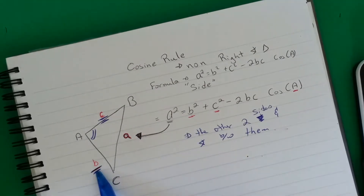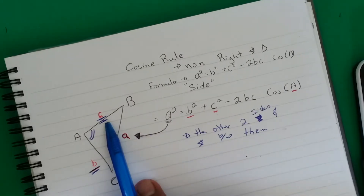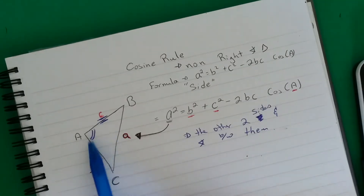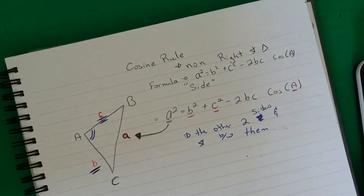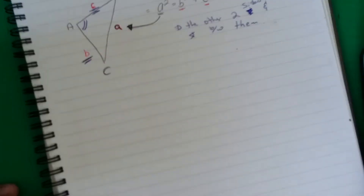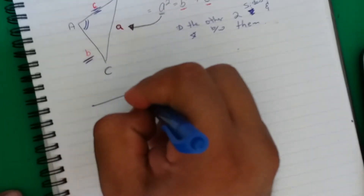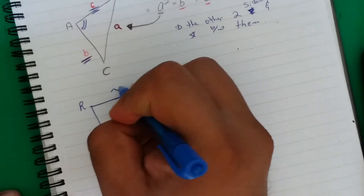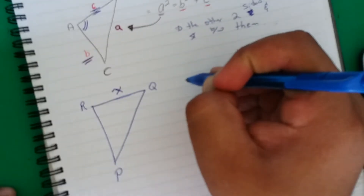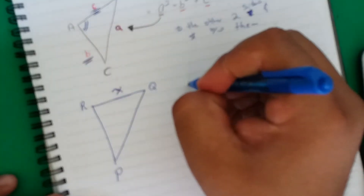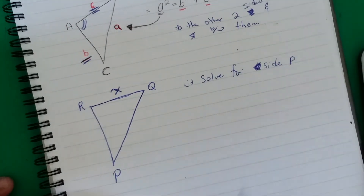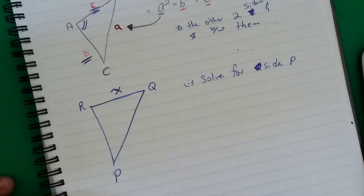Looking at the formula, to solve for side a, we need side b and side c — the other two sides — and the angle between them must be given. Now let's look at a problem. Say we have triangle PQR and we're solving for side p — we can mark it as x. From the question, it will say solve for side p, which means small p is the side I am solving for.